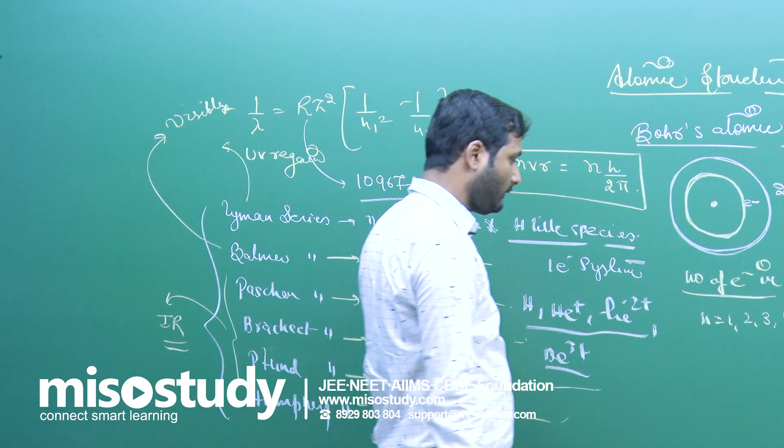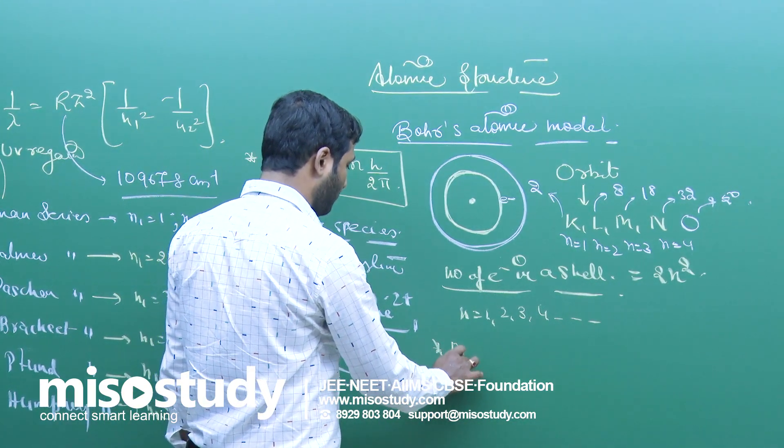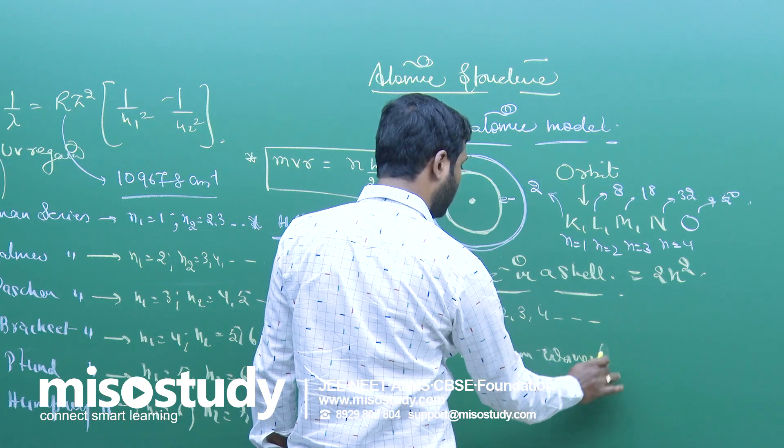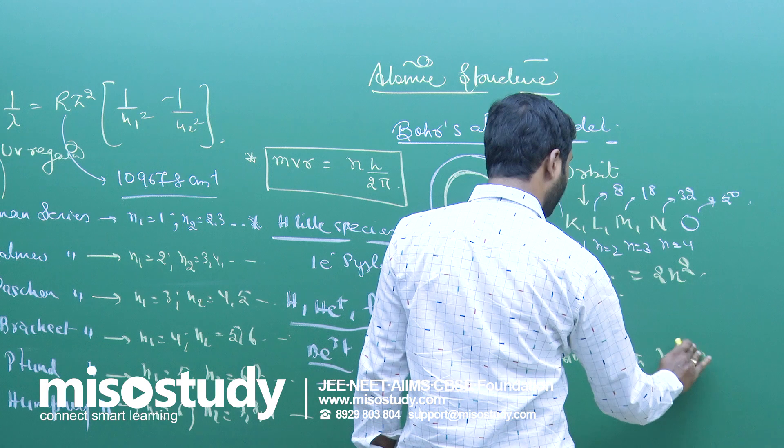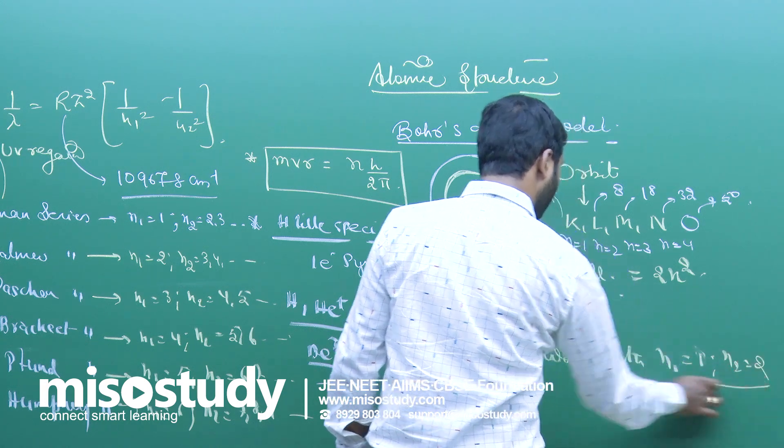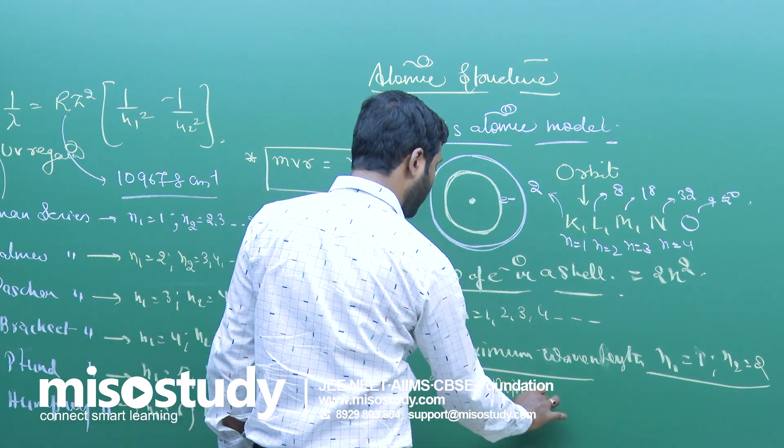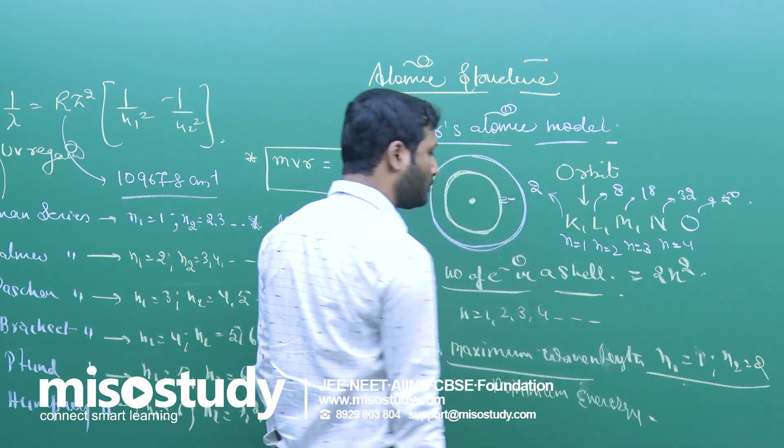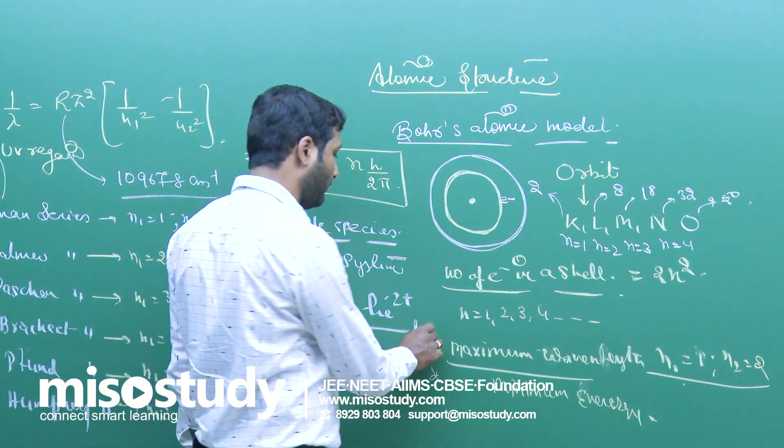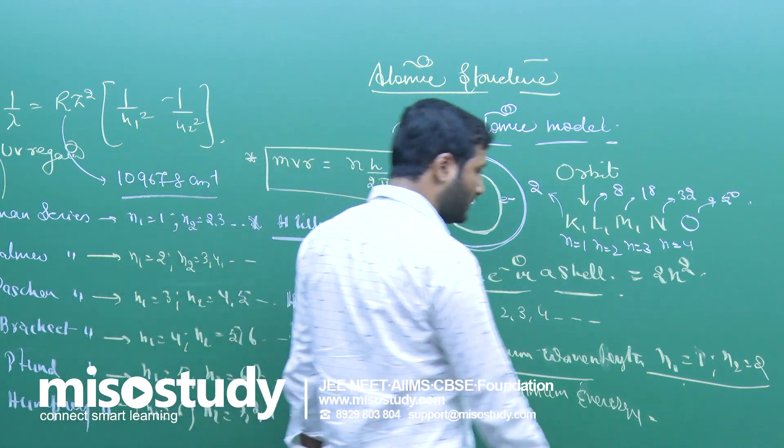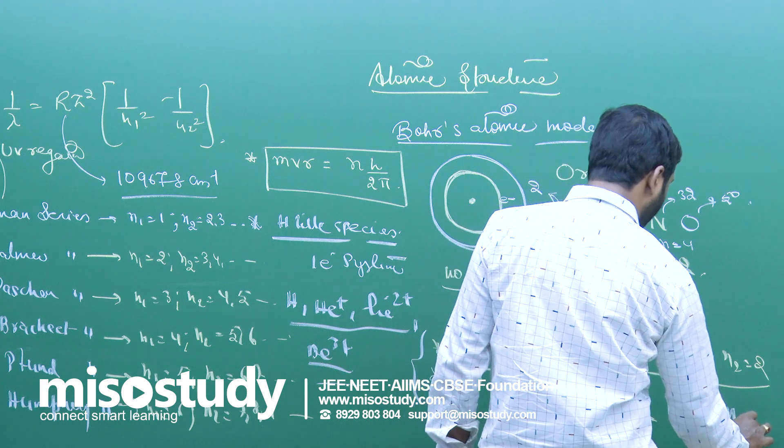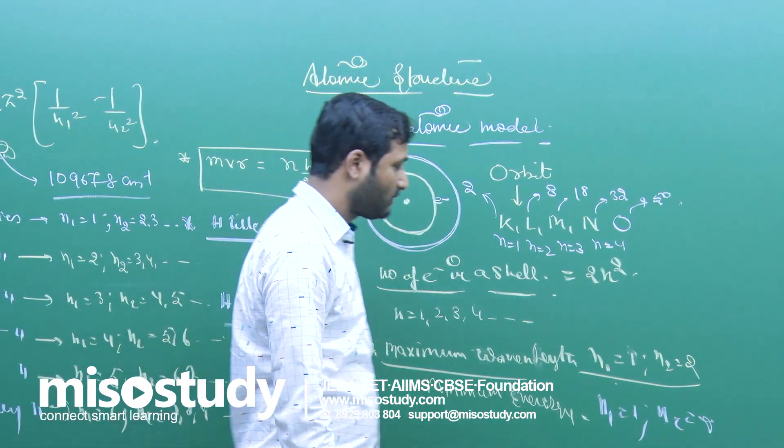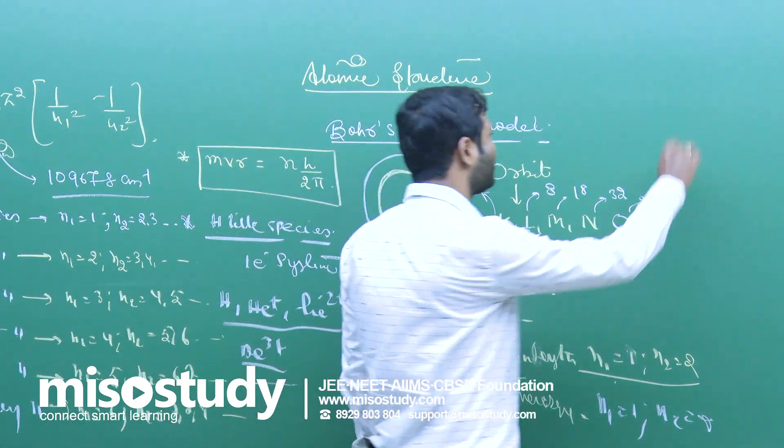If the smallest transition, that is maximum wavelength, we get maximum wavelength. Suppose n1 equals 1, any series n2 equals 2. That gives you maximum wavelength and minimum energy. Any series, suppose if I consider Balmer series, then n1 equals 2, and n2 equals 3. Similarly, minimum wavelength when n1 equals 1, suppose Lyman series, and n2 will be equal to infinity. Suppose if I take Balmer series, n1 equals 2, and n2 is infinity. These are the cases we generally observe.